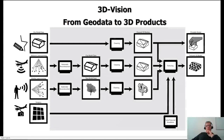Hello everybody to our project presentation of 3DVision, a way to convert geodata to 3D products. We start from existing data models, city models, from airborne laser scanning data, mobile laser scanning data, as well as aerial images.